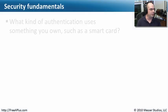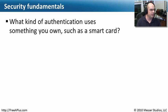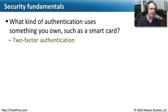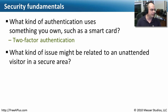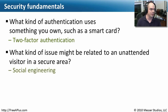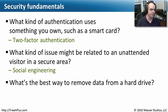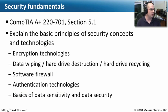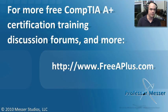Let's review our security fundamentals. What kind of authentication uses something you own, such as a smart card? That would be two-factor authentication, requiring your username, password, and that second piece of information. What issue might be related to an unattended visitor in a secure area? That could be social engineering. What's the best way to remove data from a hard drive? Securely delete it or physically destroy the drive and nobody gets anything back. That covers everything for CompTIA A+ 220-1101 Section 5.1, covering encryption, hard drive security, software firewalls, and more. Visit freeaplus.com for videos and message boards.